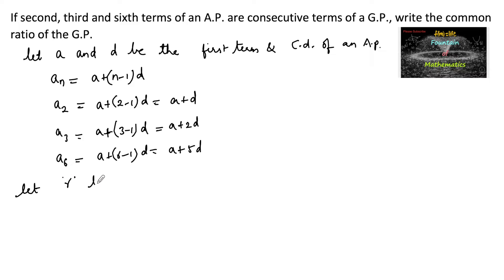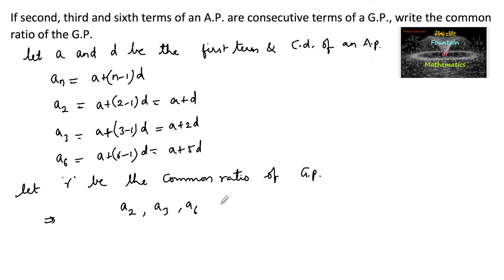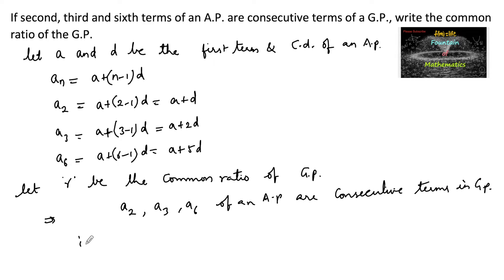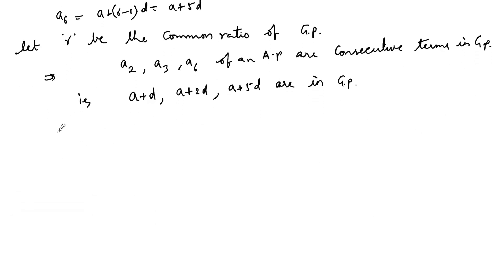Let r be the common ratio of the GP. The terms a2, a3, a6 of the AP are consecutive terms in GP, that is: (a + d), (a + 2d), (a + 5d) are in geometric progression, where r is the common ratio.